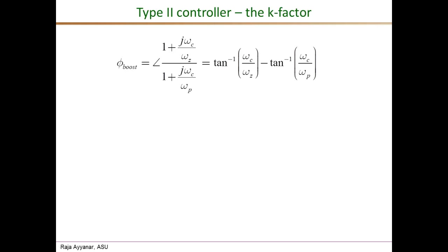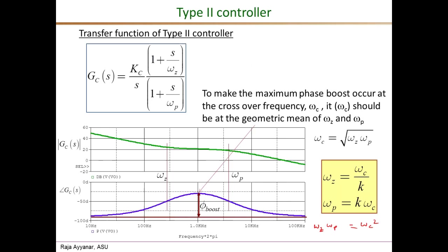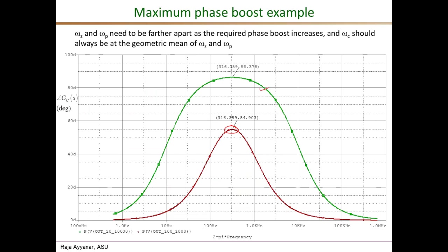We can derive an equation relating the required K-factor value to the phase boost. The phase boost provided by the pole-zero pair is the phase angle of the zero (numerator) minus the phase angle of the pole (denominator). That is arc tan of omega_c over omega_z minus arc tan of omega_c over omega_p. From our definitions, omega_c divided by omega_z equals K, and omega_c divided by omega_p equals 1 over K.